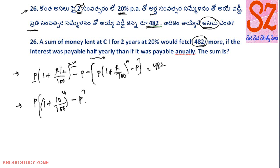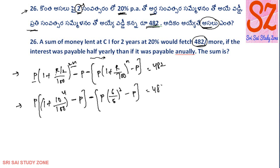Minus P and next minus. The principal amount is P into 1 plus r by 100. Simply here, 20 on the power of 1 by 100, which is 20 by 100, only 1 by 5. So n is equal to 5. 5 by 5, simply 6 by 5 to the power of 2 minus P is equal to 482.